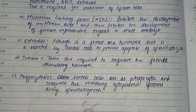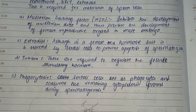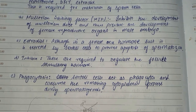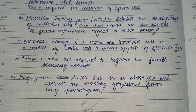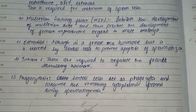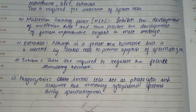Inhibin is also secreted by Sertoli cells to regulate follicle-stimulating hormone (FSH) activity.